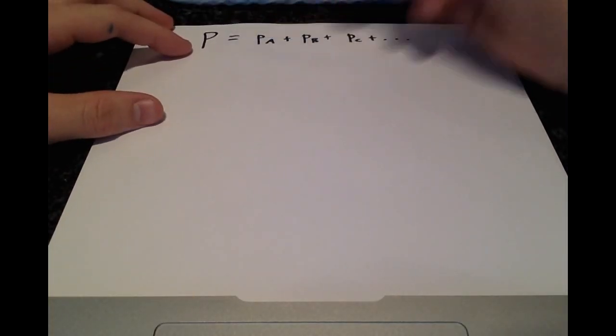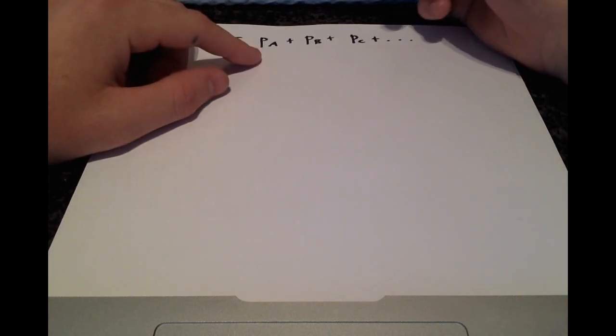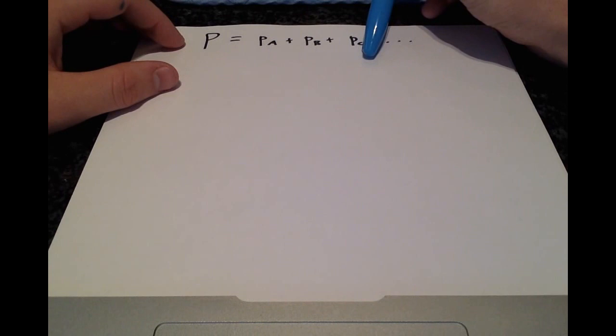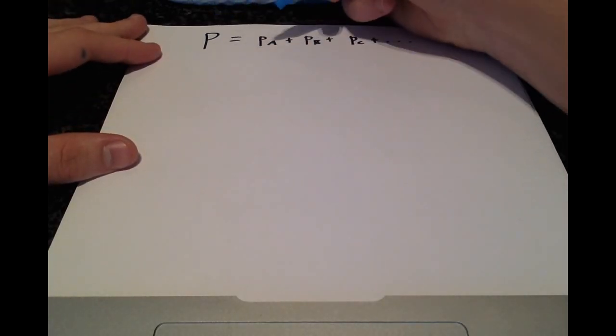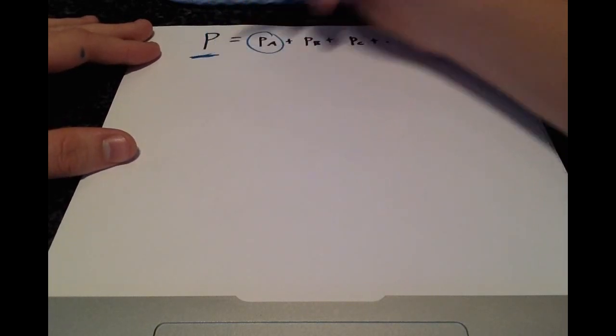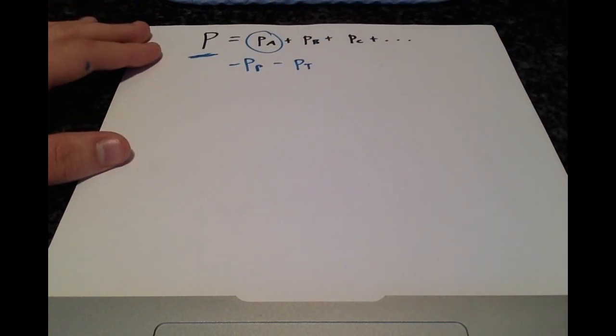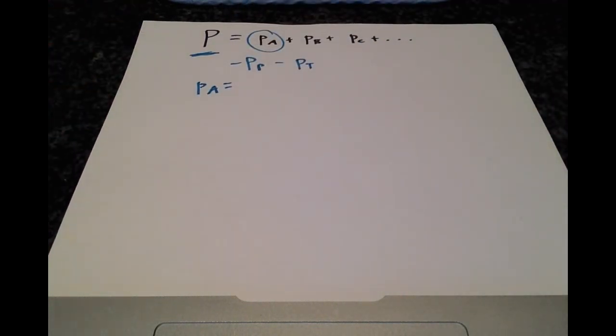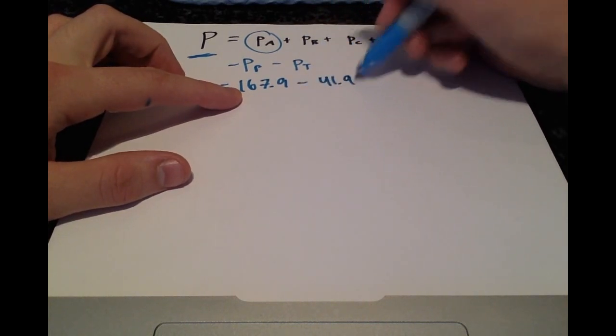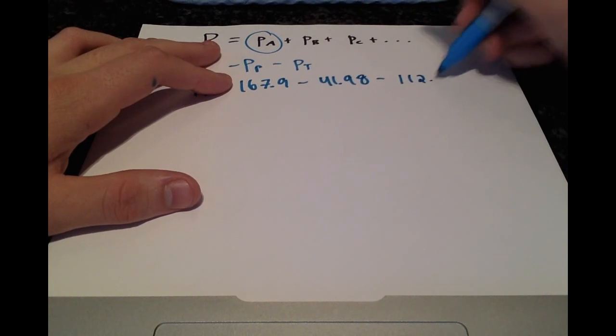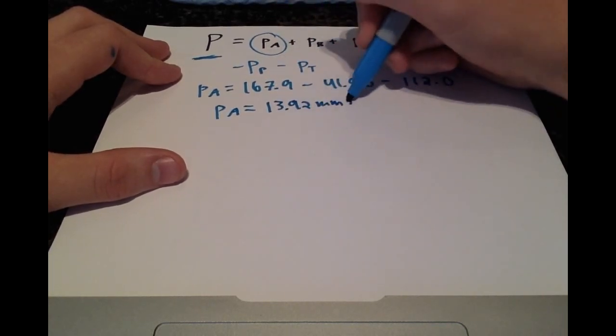Okay, so a good starting point is the relationship that the total pressure is just going to be the sum of all the partial pressures. This is just the general equation here. We have the partial pressure of aniline, the partial pressure of phenol, and the partial pressure of toluene. So if we want to isolate one of these, the value that we don't have, we can get that the partial pressure of aniline is just the total pressure minus the other two components. Alright, so if we fill in those values, we'll have that the partial pressure of aniline is 167.9, the total pressure minus the two other partial pressures. Okay, so we get that the partial pressure of aniline is 13.92 millimeters of mercury.